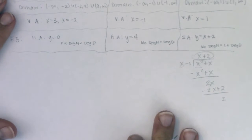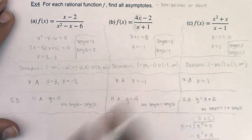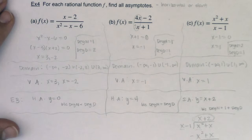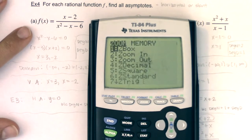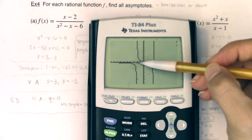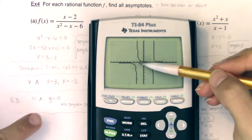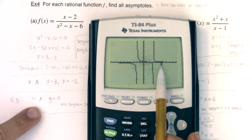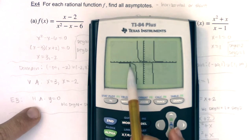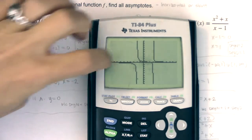Let me scooch this back down and take a look at these graphs on our calculators so you can see this algebra lining up with the graph. For the first function, I can see a vertical asymptote at x equals negative 3 and another at x equals 2 — my algebra is lining up. My horizontal asymptote is y equals 0, which is the x-axis. As I move right and left, my function gets closer and closer to the x-axis.